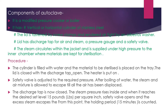Procedure: the cylinder is filled with water and the material to be sterilized is placed on the tray. The lid is closed with the discharge tap open and the heater is switched on. The safety valve is adjusted to the required pressure. After boiling, the steam-air mixture is allowed to escape until all air is displaced. The discharge tap is closed and steam pressure rises inside the autoclave to the desired level of 15 lbs per square inch, at which point the safety valve opens and excess steam escapes. The holding period of 15 minutes is then maintained.